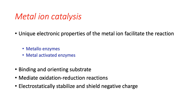Metal ions help in the catalytic process in different ways: they bind substrate and orient it properly for the reaction; they mediate oxidation-reduction reactions through changes in the metal ion's oxidation state; and by electrostatically stabilizing or shielding negative charges, metal ions are more effective catalysts than protons — sometimes known as super acids. Metal ions promote nucleophilic catalysis through water ionization, where the metal ion-bound hydroxyl group acts as a powerful nucleophile. This mechanism operates in the carbonic anhydrase reaction. The charge-shielding effect is present in the kinase reaction, where the actual substrate is magnesium-ATP, and magnesium shields the negative charge of the phosphate, helping in nucleophilic attack.